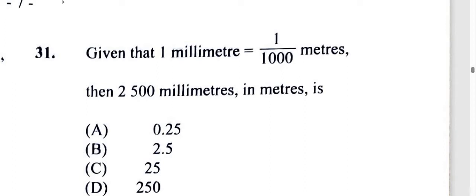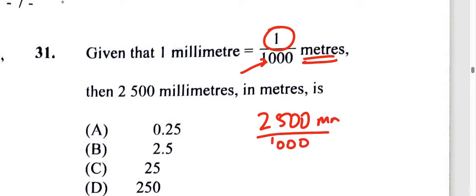All right, so we're told that one millimeter can be found by dividing that one by a thousand to get it into meters. So with 2,500 millimeters, we're going to divide that same 2,500 millimeters by the same thousand. And by doing this, we'll get the answer in meters.